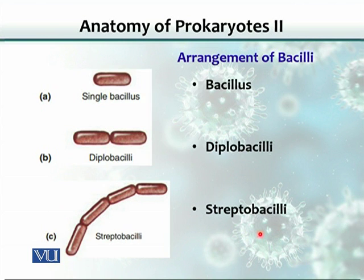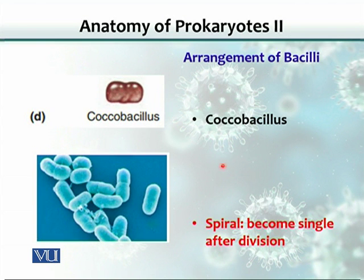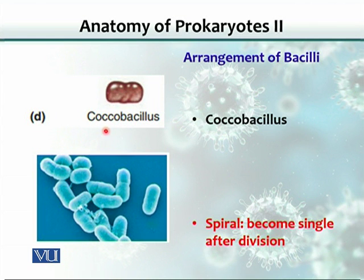Similarly, bacilli can also be arranged in various forms. A single bacillus, after division, if the two rod-shaped cells stay together, we call them diplobacilli. If they remain attached one after the other following cell division, we call them streptobacilli — strept meaning chain. Sometimes there is a variation where the cell resembles two or three cocci together but overall looks like a rod; this special morphological structure is called a coccobacillus, plural coccobacilli.